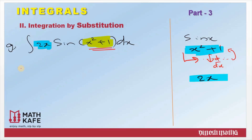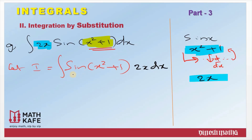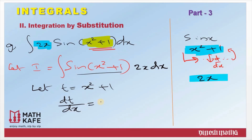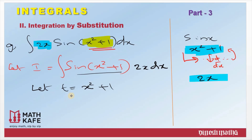Now let us rewrite the question. Let I equal to the integral, and always rewrite the question such that the term you are going to use as substitution is written first, and the leftover is written with the dx. So I have written the question as sine of (x² + 1) into 2x dx. Let t equal to x² + 1. Differentiate: dt/dx equals 2x, so dt equals 2x dx.